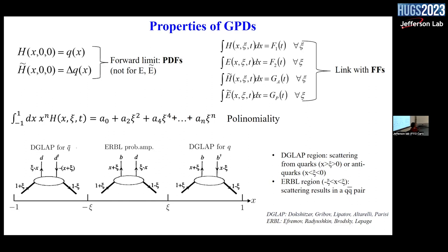GPDs have properties that help constrain them by connecting to known quantities. In the forward limit — setting T and ξ to zero — GPD H reduces to the unpolarized PDF q(X), and GPD H-tilde reduces to the polarized PDF Δq(X). Integrating over X, the GPDs yield the form factors measured in elastic scattering. There is also the polynomiality property: the moments in X of GPDs are a sum of polynomials in the variable ξ, with coefficients depending on T.